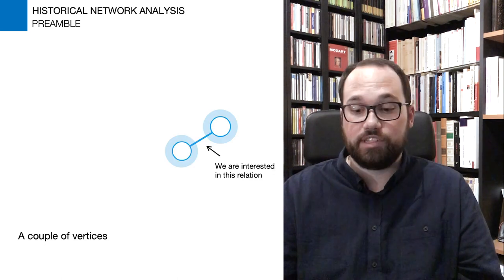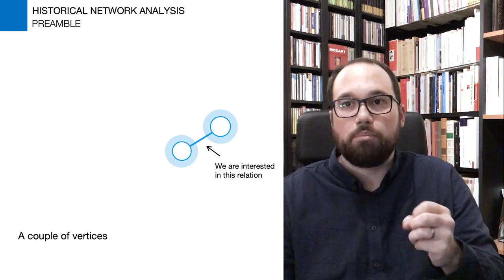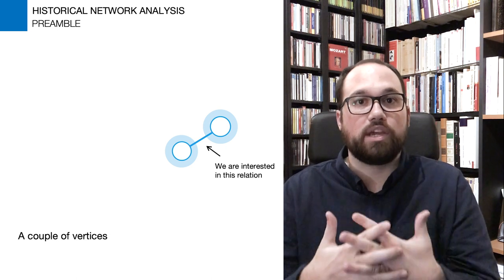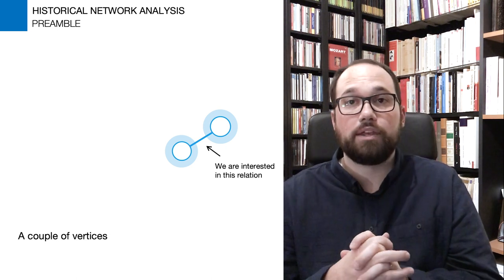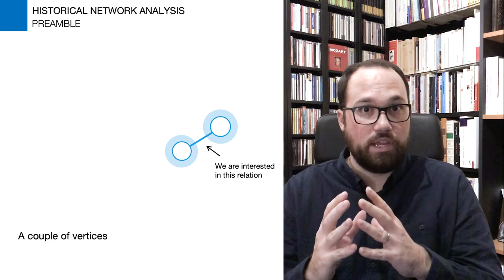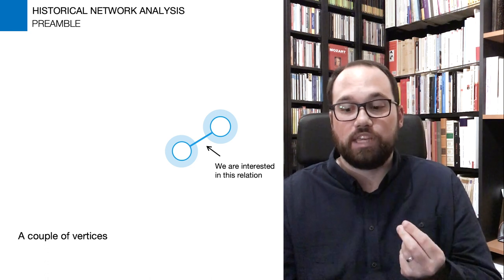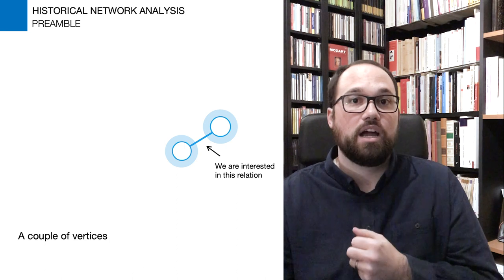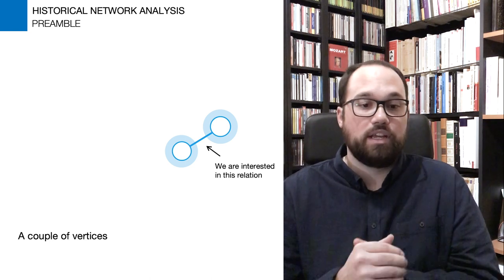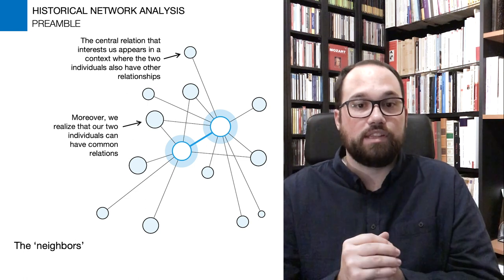Let's start with this couple of vertices and elaborate that we are interested in the relation between these two people. This relation can be, say, 10 letters between them at a certain point. Of course, a traditional historian will look at the content of these 10 letters and try to extract meaningful information. Network analysis will not get rid of this approach, but what will be interesting is to look at the archives of these two persons and see that they also have other relationships with other individuals. These central relations appear in context.